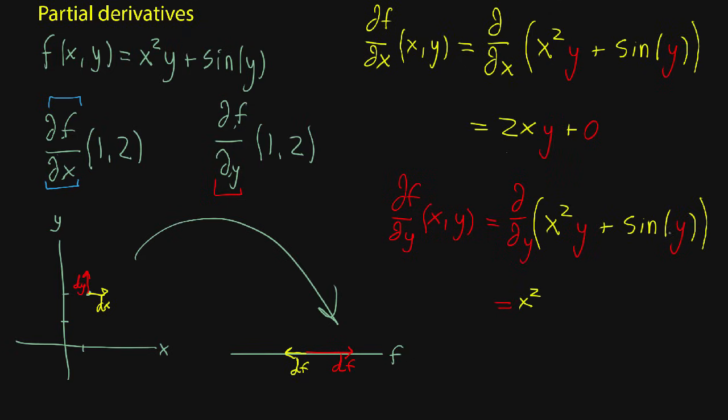And over here, you're taking the derivative of sine of y. There's no x's in there. So that remains... oh, sorry, that's cosine of y. Cosine of y. Because we're taking a derivative. And now, this is a more general formula. If you plugged in (1,2), you would get 1 plus the cosine of 2, which is what we had before.